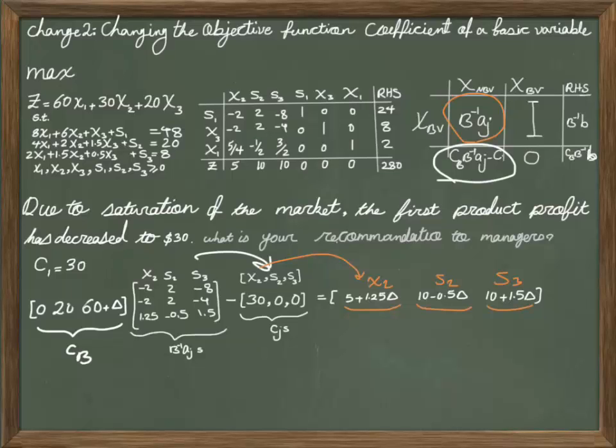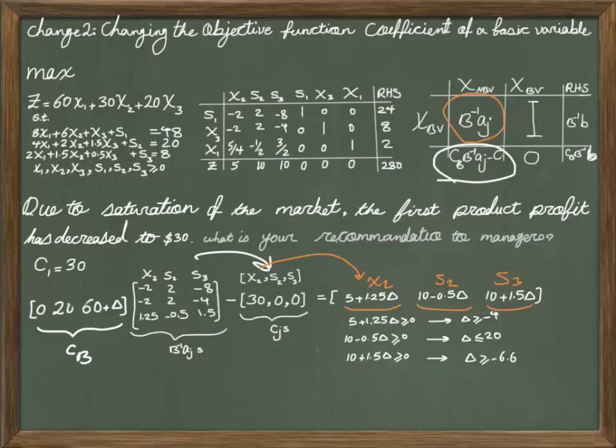I enforce each of these terms to be a positive term and find a range of delta for them. Now the final range of delta will be for the intersection of all these areas.